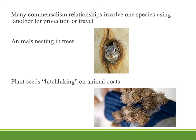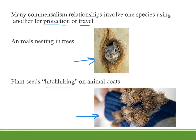Many commensalism relationships involve one species using another for protection or travel. Animals that nest in trees, like squirrels finding a hole, or spiders building webs between plants, are examples of using another organism for living space. Many plant species also have seeds that hitchhike via burrs or stickiness on the seed coat, attaching to animals to be transported and deposited far from the parent plant. Burdock is one example, and its hooked seed pods are believed to have inspired the invention of Velcro.